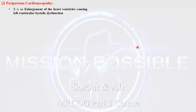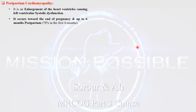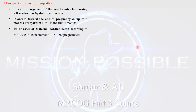What is peripartum cardiomyopathy? We will give a quick review because it may appear as a structured discussion, then come to the scenario that appeared as a simulated patient task. The definition means enlargement of the heart ventricles, mainly on the left side, causing left ventricular systolic dysfunction. The diagnostic criteria include onset towards the end of pregnancy and up to six months postpartum — this timing differentiates peripartum cardiomyopathy from idiopathic cardiomyopathy.